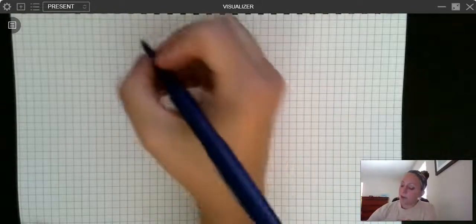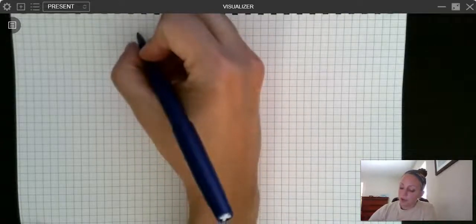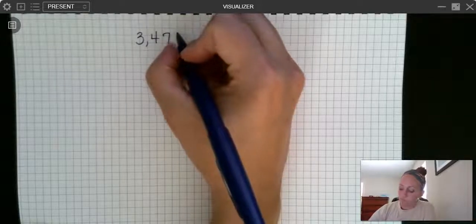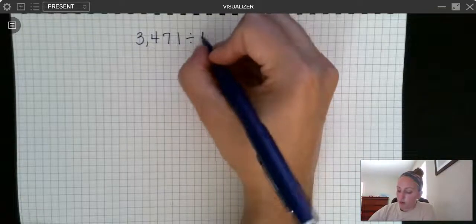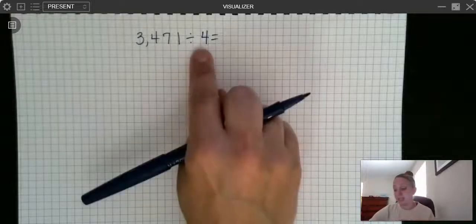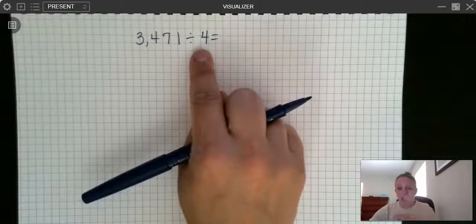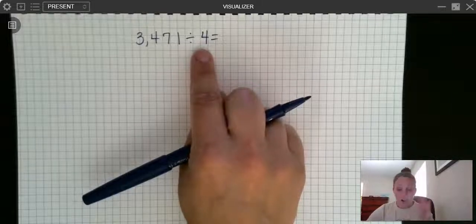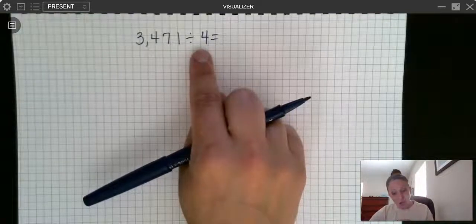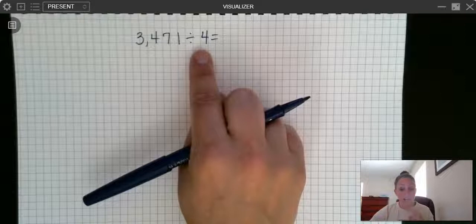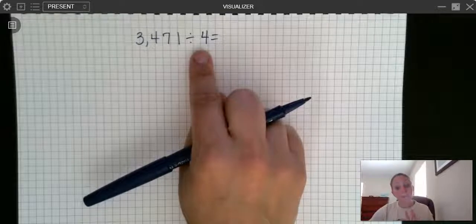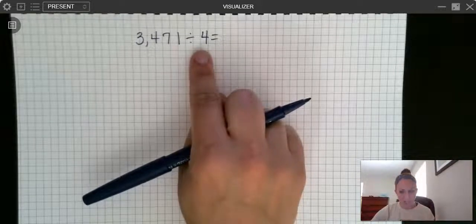But I do want to show it to you guys because it is part of your lessons. This does go with lessons nine and ten. And what I'm actually going to do is do two problems side by side. I'm going to do the same problem with the area model and with the long division strategy so that you can see you're actually doing the exact same thing for both problems. Here is our problem. Let's do 3,471 divided by 4. First thing I'm going to do is think, can I skip count by fours?